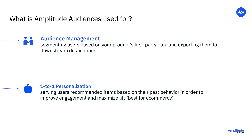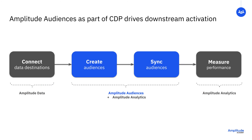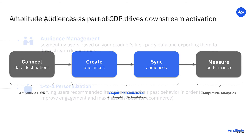You can also uncover new audiences by leveraging Amplitude's machine learning to build predictive cohorts — users grouped based on behaviors Amplitude anticipates them taking. Your cohorts can then be synced to downstream platforms in your growth stack, so you can translate your insights into action.